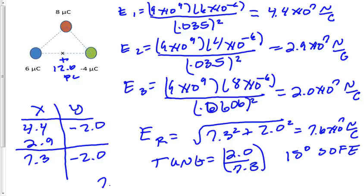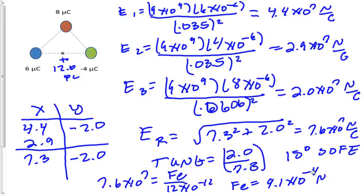Electric field is force electric per charge. So then I'm going to say 7.6 times 10 to the 7 is equal to force electric divided by 12 times 10 to the minus 12. So that's what a picocoulomb charge is. And the value for the electric force is going to equal 9.1 times 10 to the minus 4th newton. And the angle will still be 15 degrees south of east because the electric field points in the same direction as electric force.